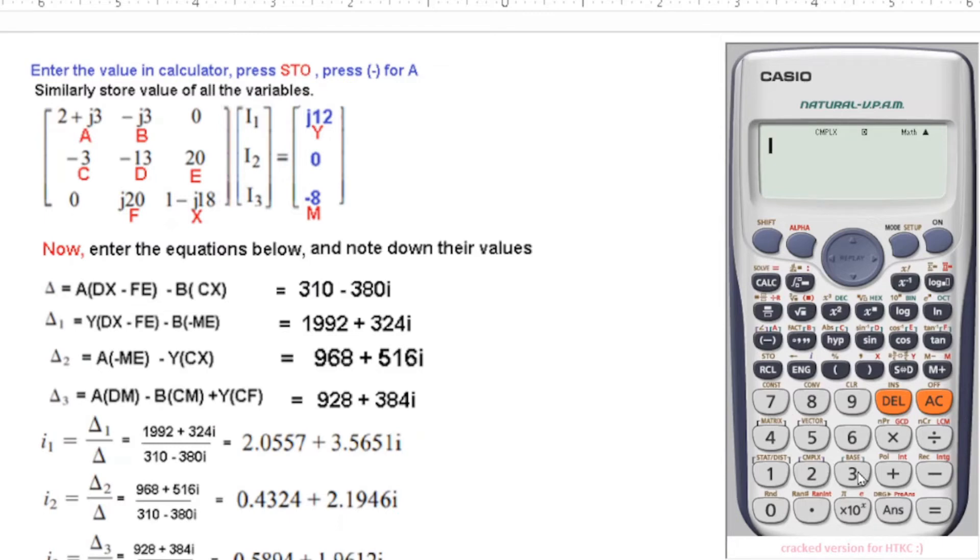And then we come here. j12 is Y, so 12i, store as Y. And finally, minus 8 is M, so minus 8 assigned, stored as M. So all the values we have assigned, and now we will solve these equations here.